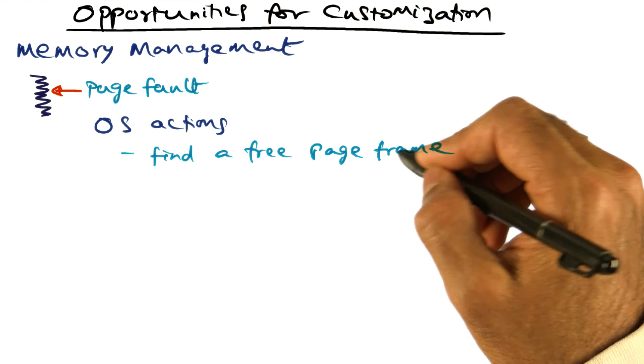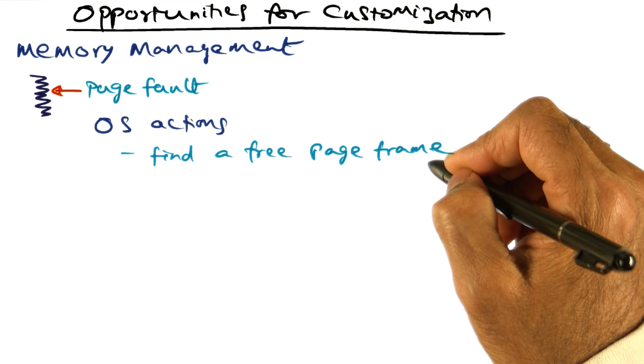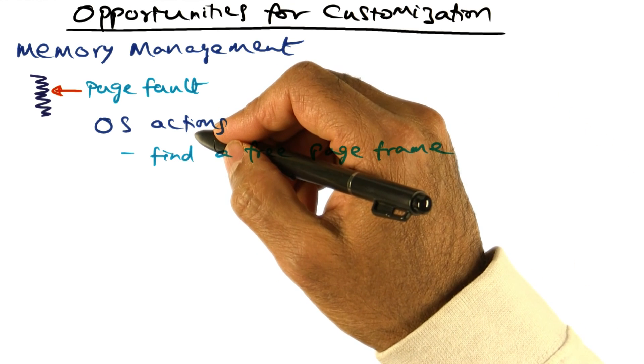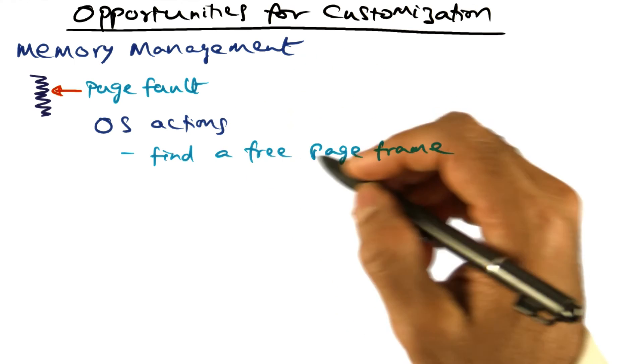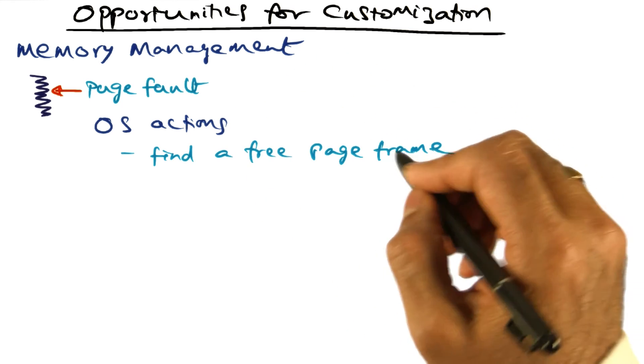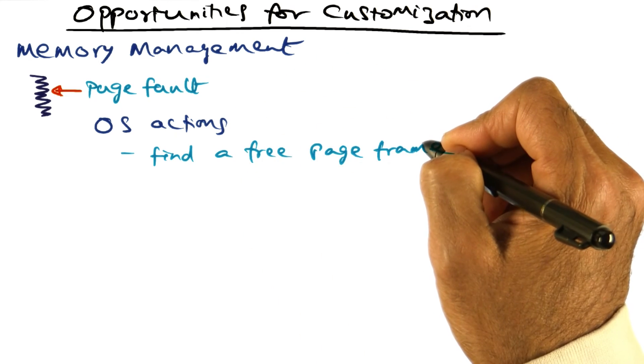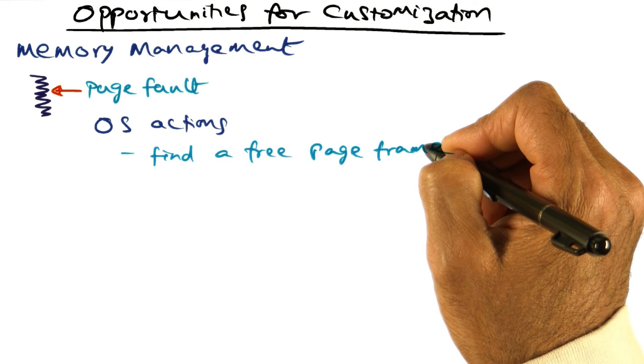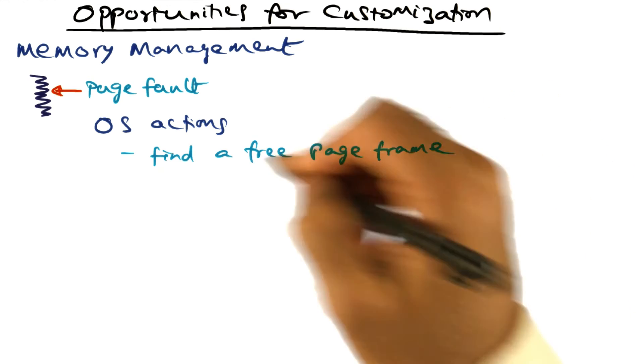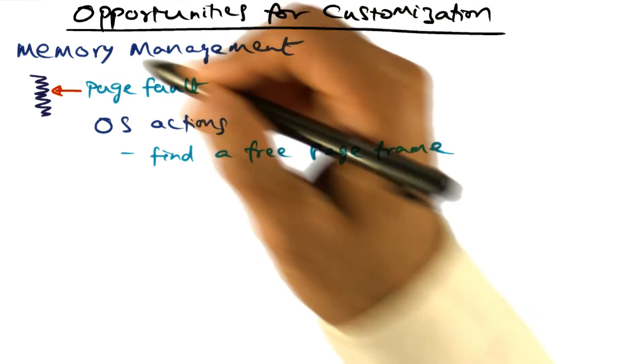And once it allocates a free page frame, then the operating system is going to initiate the disk IO to move the page from virtual memory into the free page frame that has been identified for hosting the missing page of this particular thread.